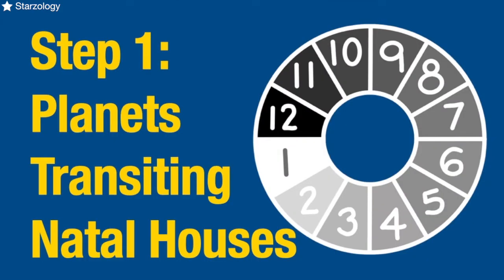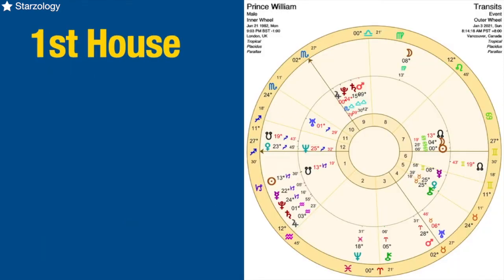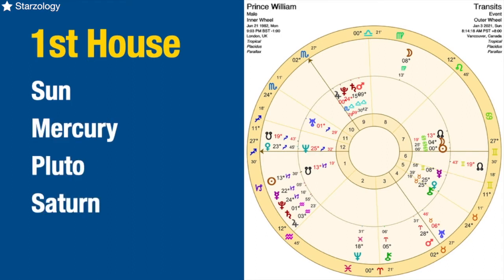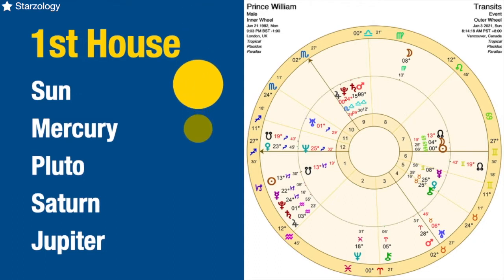When working with transits, step one is looking for planets transiting natal houses. In his particular case, looking at the first house, we see there are a few planets: he's got the Sun, Mercury, Pluto, Saturn and Jupiter — that is actually five planets currently transiting through his first house. This will definitely be stimulating the first house for him, which is of course his personality and how people see him, who he is, his physical body, what he looks like and all the rest of it.